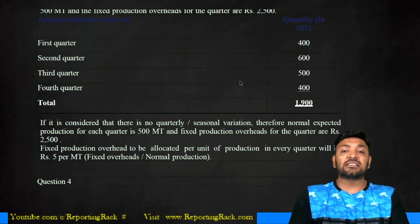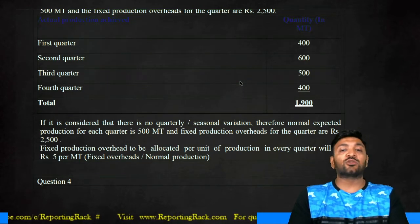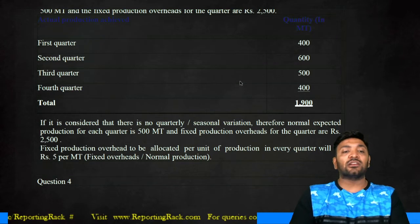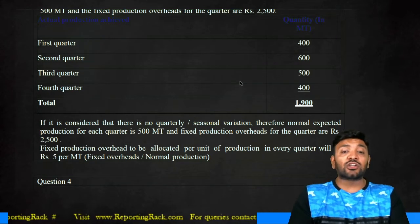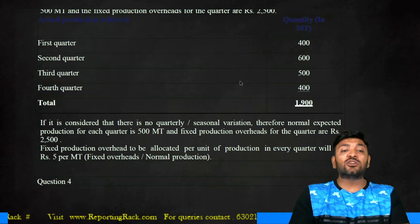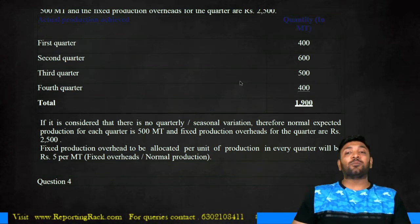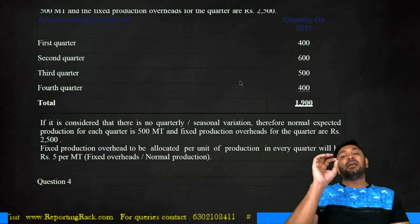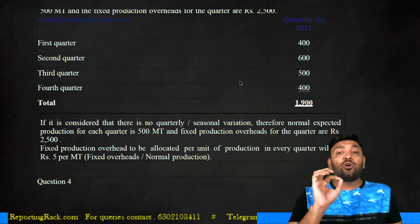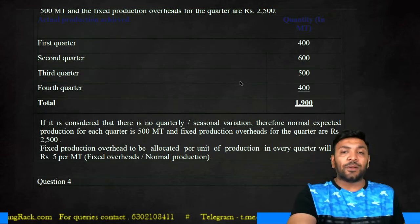Since there is no cyclical or seasonal variation, normal expected overheads of each quarter at 500 metric tons gives production overheads per quarter of 2,500. Production overheads allocated per unit in each quarter will be 5 rupees per metric ton, giving 2,000; 3,000; 2,500; and 2,000. Under-absorbed overheads of 500 rupees will be straightforwardly charged to P&L.